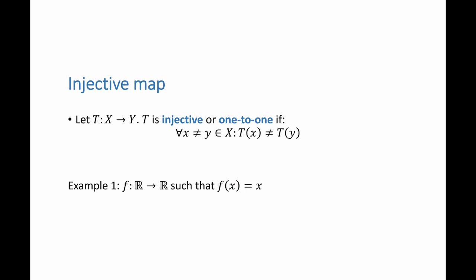As an example, the function from R to R defined as f of x is equal to x is injective. Because if I have two different elements in R and I calculate f of each, I will get always two different images.